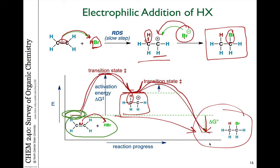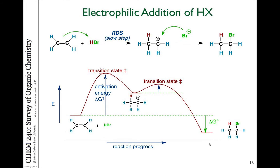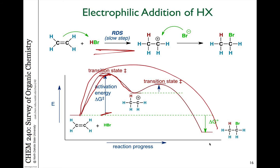So this reaction proceeds forward. In this reaction, the slowest step is the first step. As you can see, the activation energy is the highest for that step — it's the highest barrier we have to climb in order to get from starting materials over to products.